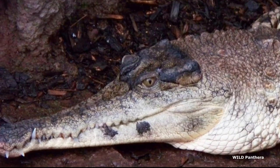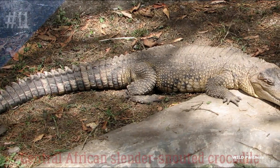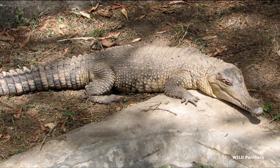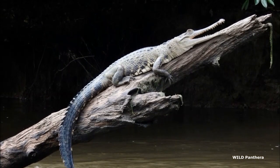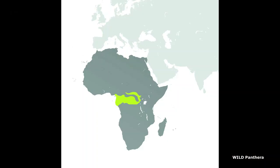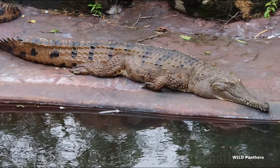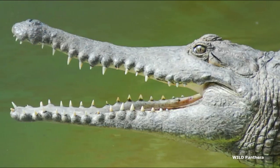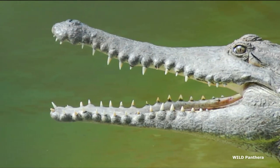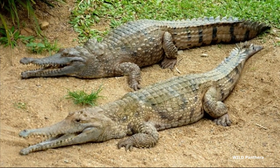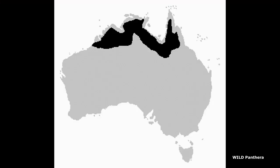It is a critically endangered species. 10. Central African Slender-snouted Crocodile — Mecistops leptorhynchus is a very rare, recently discovered species found in Central Africa. 11. Australian Freshwater Crocodile — Crocodylus johnstoni is a smaller species with a narrow and elongated snout. It lives in the rivers of northern Australia.